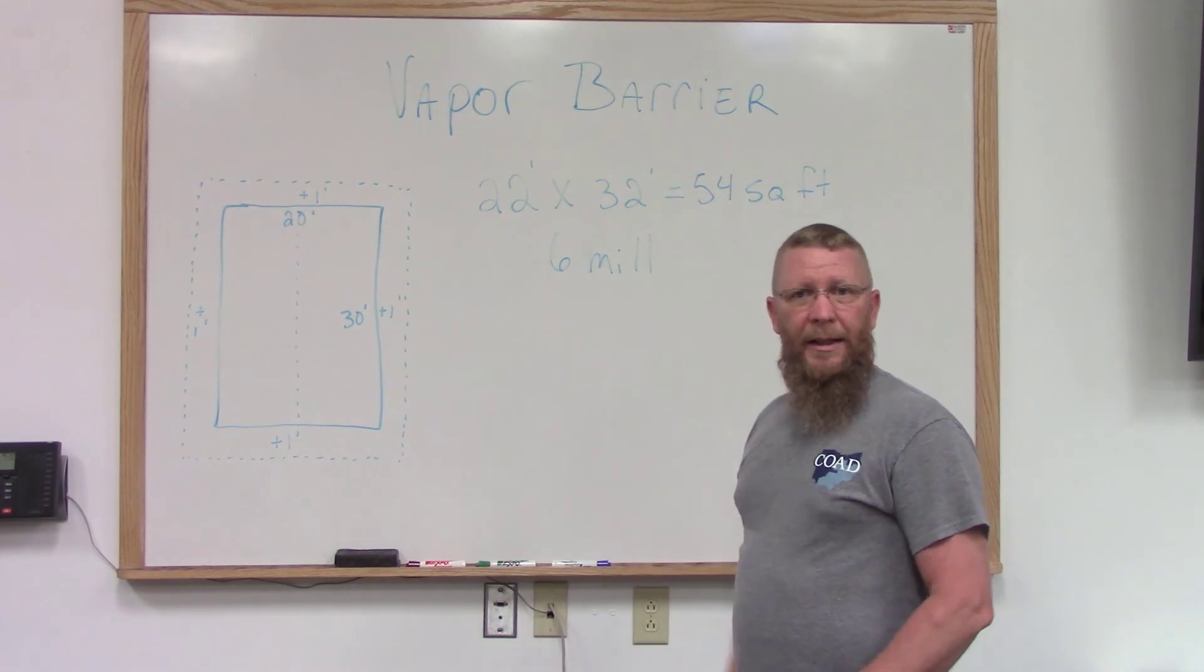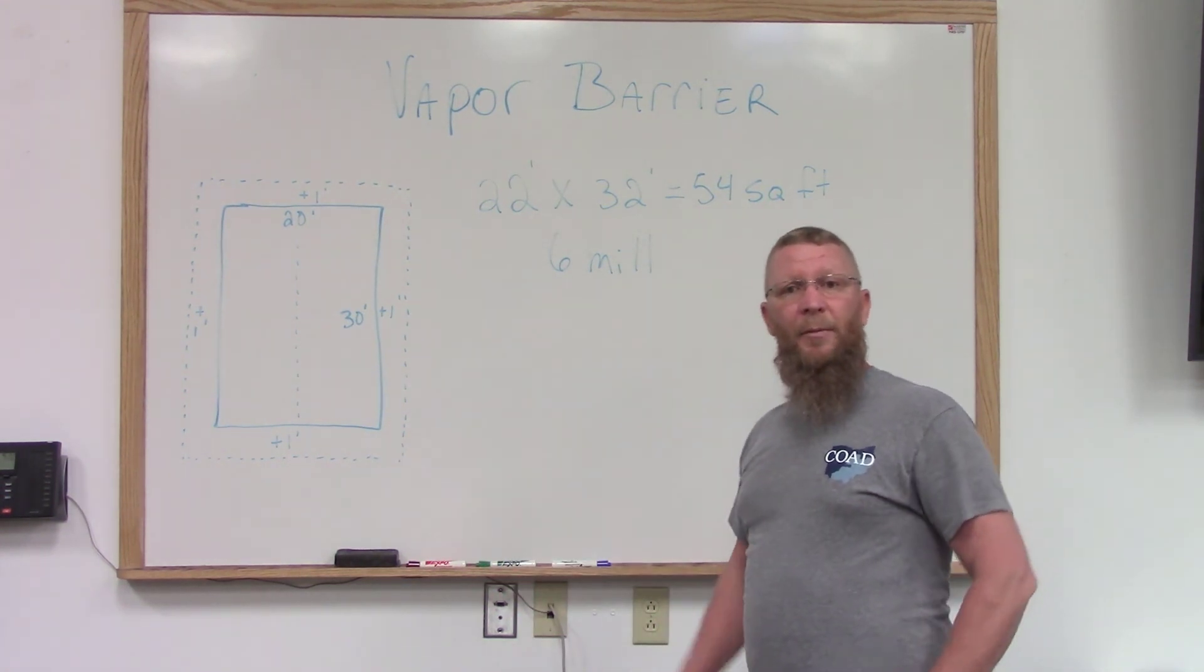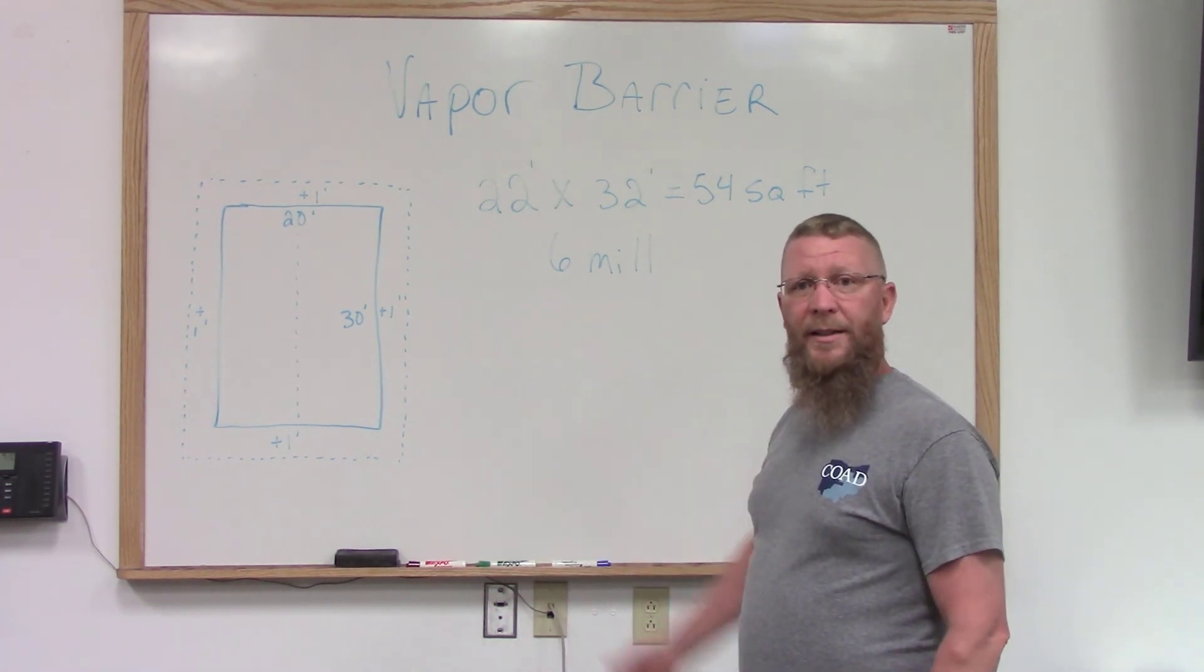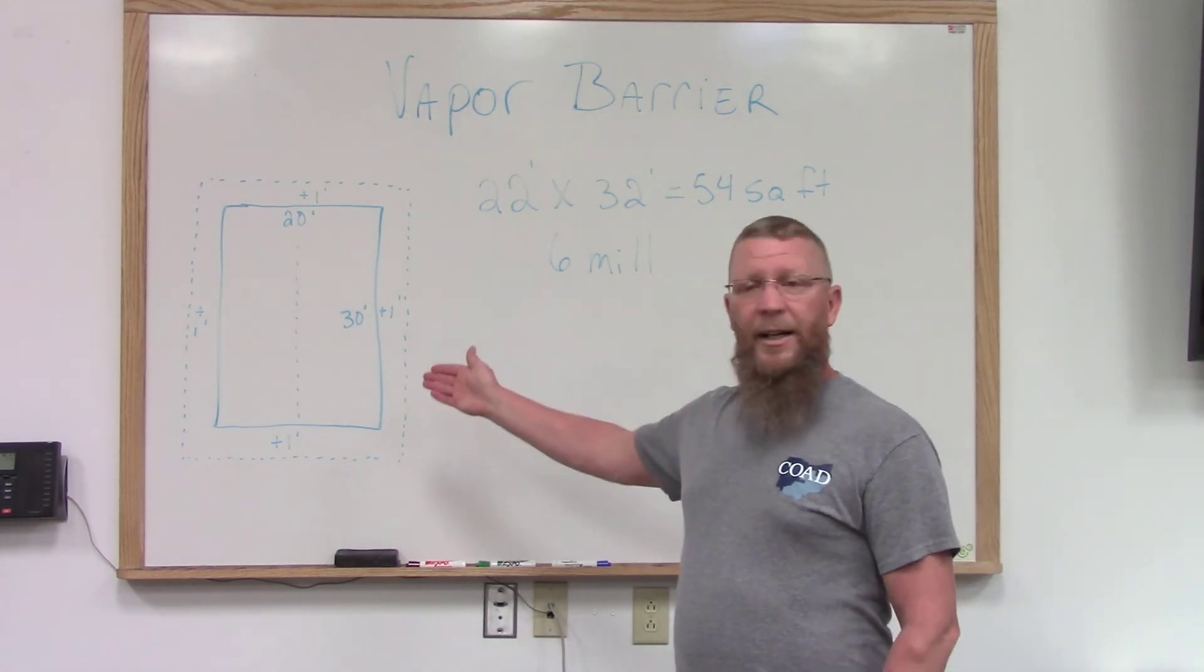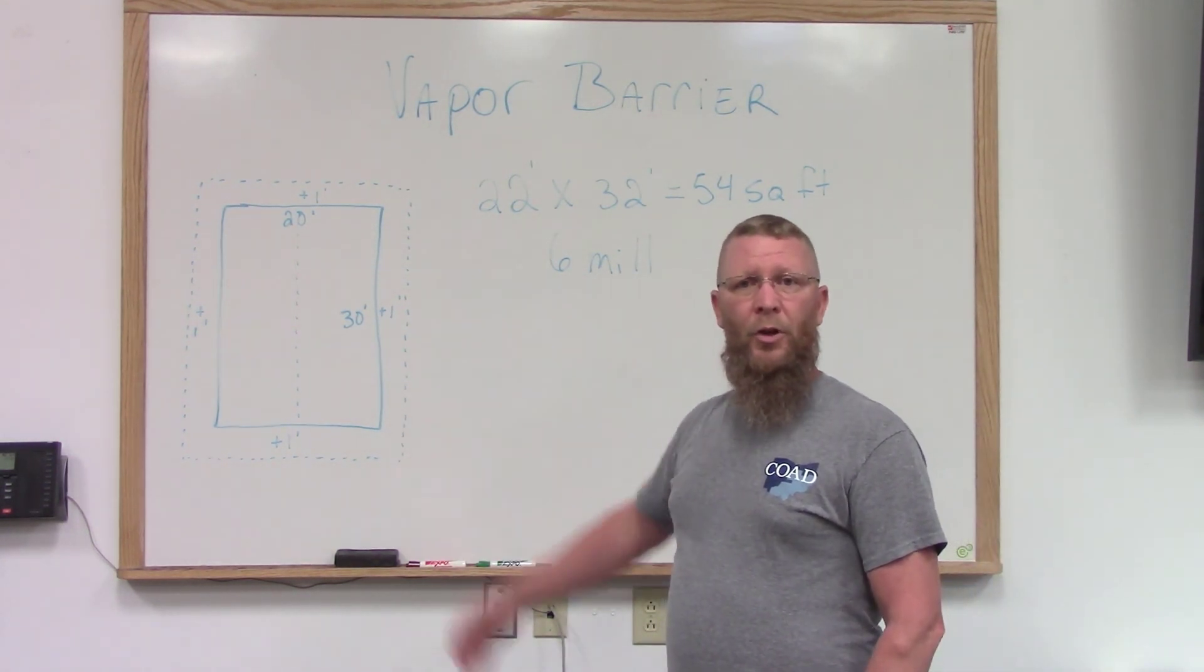But this, in a nutshell, is how you figure out how many square feet of six mil plastic it's going to take to create a good vapor barrier in your crawl space.